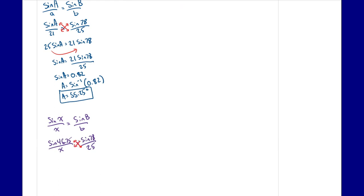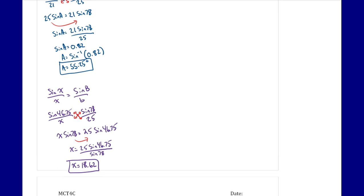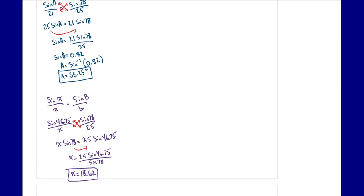Cross multiplying to get rid of the fractions: x times sine 78 equals 25 times sine 46.75. Moving sine 78 over: x equals 25 times sine 46.75 divided by sine 78. You can solve the numerator and denominator separately before dividing if you prefer. Either way, we get that our missing side length x is equal to 18.62 centimeters.